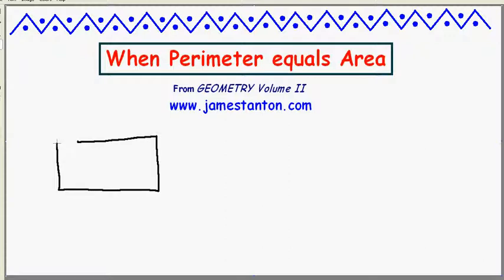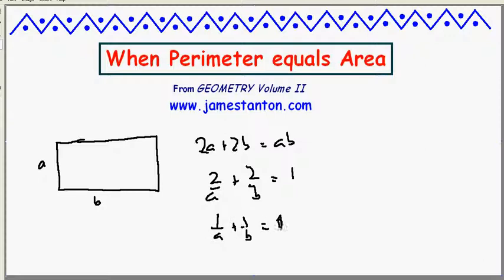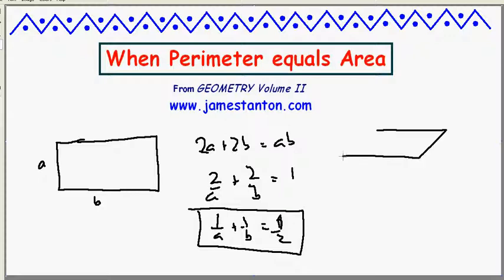Challenge for you. This is going to be nothing but challenges. Given my rectangle, we proved that area equals perimeter if twice A plus twice B equals AB. I could rewrite this formula as dividing everything by AB as 2 over A plus 2 over B equals 1. Or if I divide by 2, 1 over A plus 1 over B equals 1 half. So there's the condition for area to equal perimeter for a rectangle.